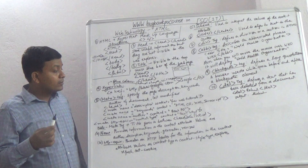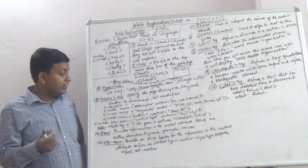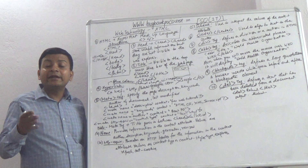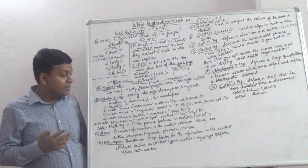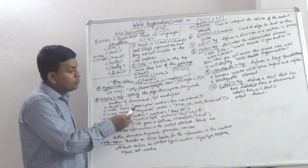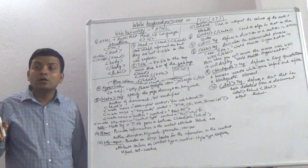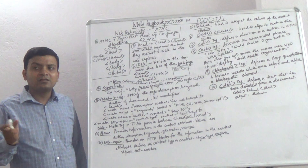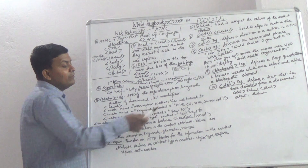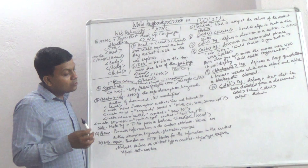Now, meta tag. Meta tag specifies the page description, keywords, author, and last modified. Meta tag comes in between the head tag. Meta tag information is not displayed in the website. For description: meta name is called description, content is called free web tutorials. Meta name is called keywords — that means if you type something in Google and it should appear in your website, you can put keywords like HTML, CSS. Meta name is called author, content is called bank PO.